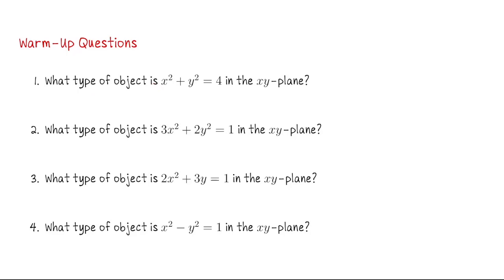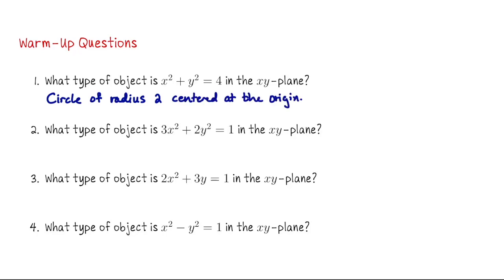The first question is: what type of object is x squared plus y squared equals 4 in the xy-plane, just in R2? The next question is: what is the shape of 3x squared plus 2y squared equals 1 in the xy-plane? And what is 2x squared plus 3y equals 1 in the xy-plane? And lastly, what is x squared minus y squared equals 1?